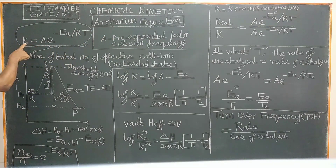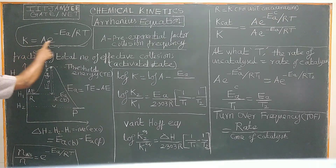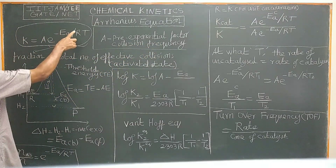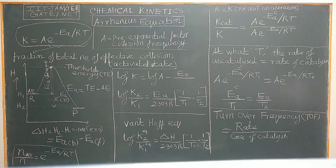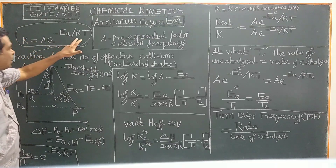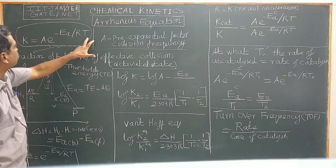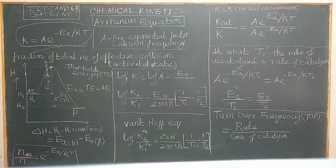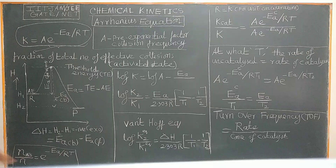This equation is called the Arrhenius equation, where k is the rate constant, A is the pre-exponential factor or collision frequency, e to the power of minus Ea by RT, where Ea is the activation energy or energy barrier, R is the molar gas constant, and T is the temperature in Kelvin. The exponential factor gives the fraction of the total number of activated molecules.